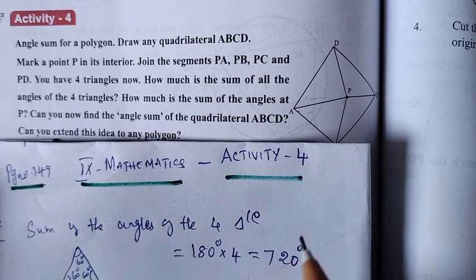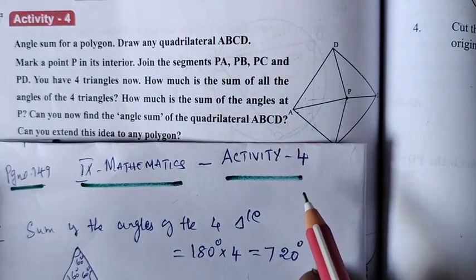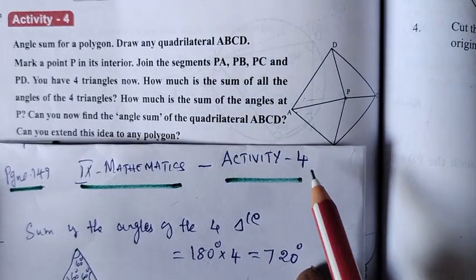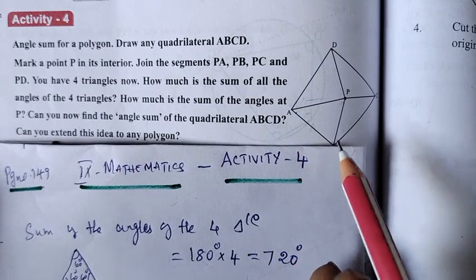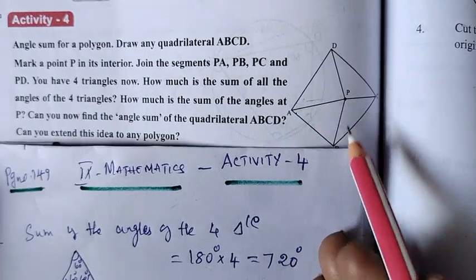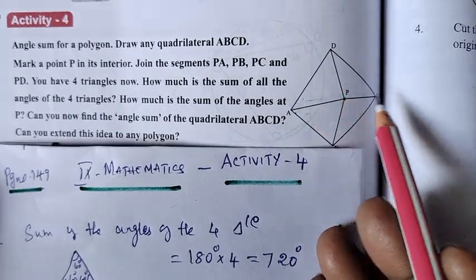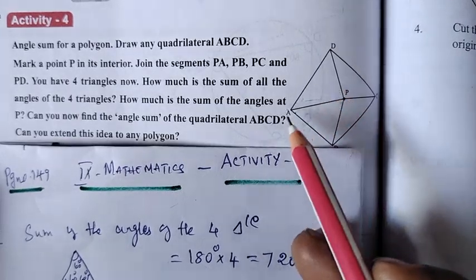Draw any quadrilateral A, B, C, D. Mark a point P in its interior. Join the segments PA, PB, PC, and PD.